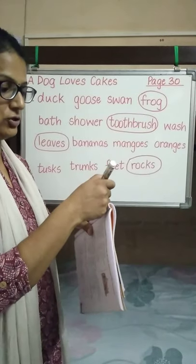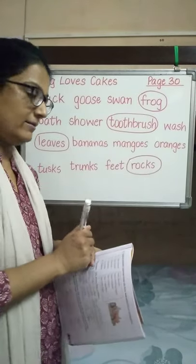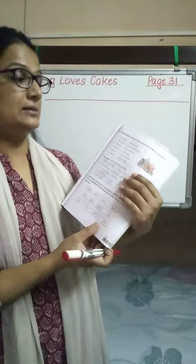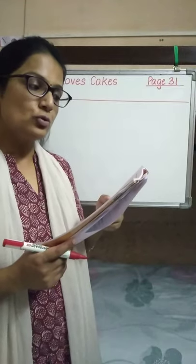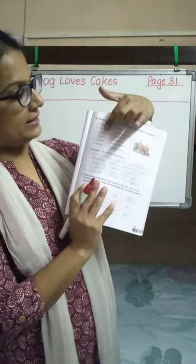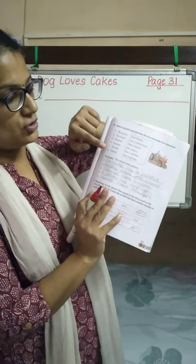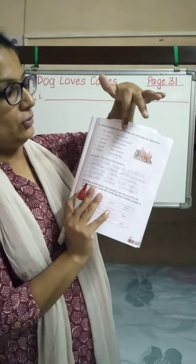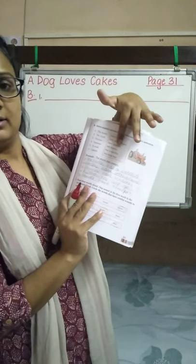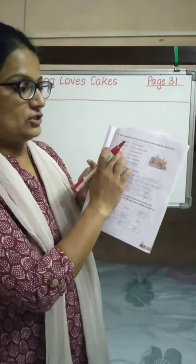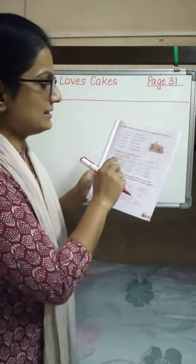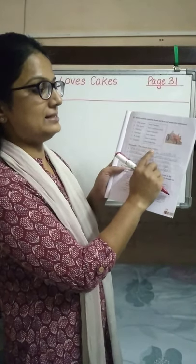Moving ahead with Exercise B. We need to select suitable options from the box and make five sentences. The starting of the sentence is given: the moon, the earth, doctors, farmers, a stork, camels. We need to pick up the other part of the sentence which goes along with this part. For example: The moon has craters.